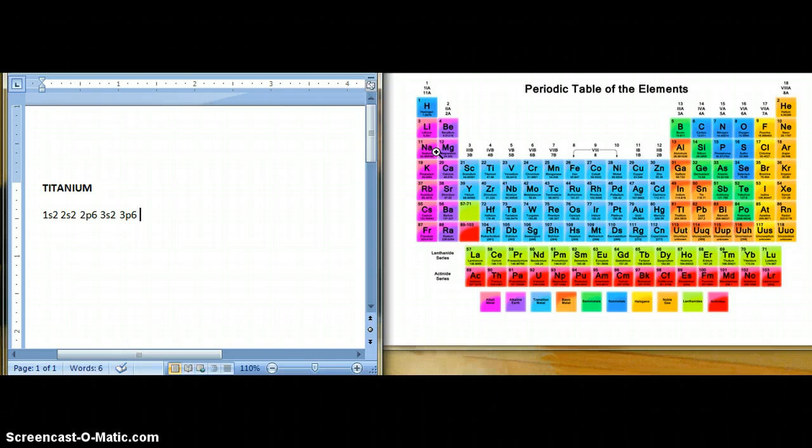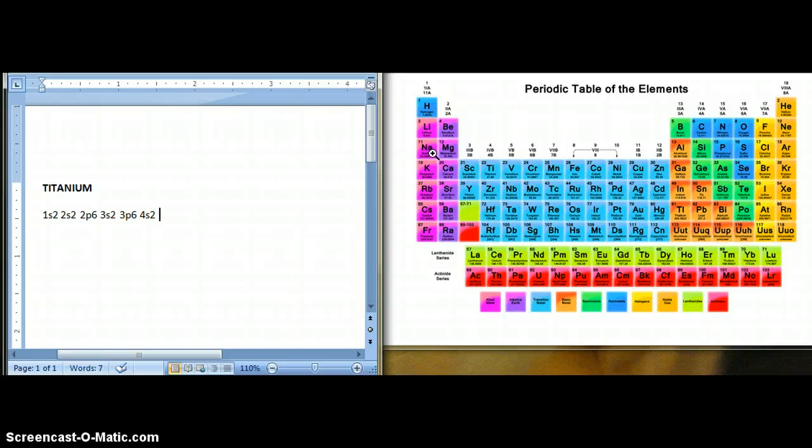For the next one, you go to the fourth row, so you go 4S2. And then for the next one, you don't go back to the P level, you actually go back into the blue area, the D energy level over here.